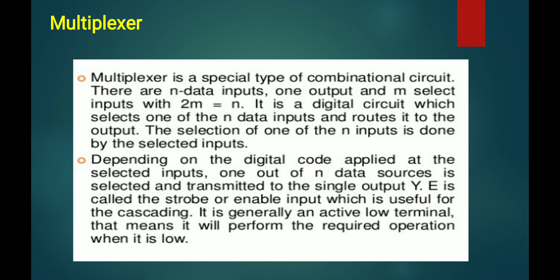The selection of one of the n inputs is done by the select inputs. Depending on the digital code applied at the select input, one out of n data sources is selected and transmitted to the single output. E is called the strobe or enable input, which is useful for cascading, and it is generally an active low terminal — meaning it performs the required operation when it is low.